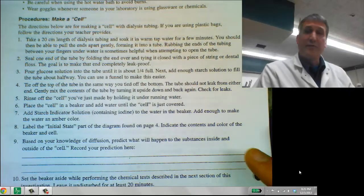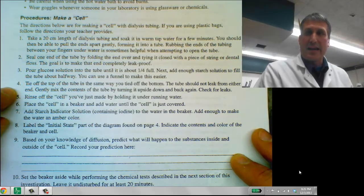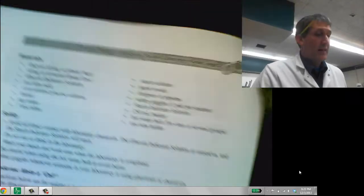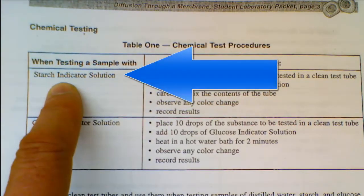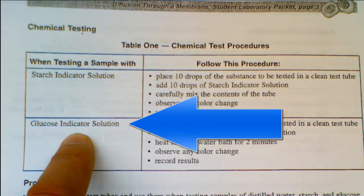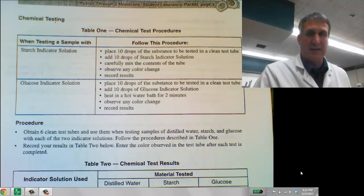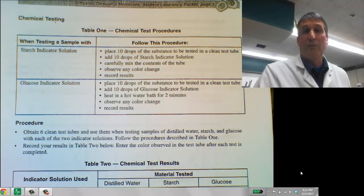So this video has covered the information that you need to make the cell and complete the setup. The next part, we're going to be looking at a starch indicator to see if the starch moved and we're also going to be using a glucose indicator. I will cover how to use those indicators in another video. I hope that was helpful.